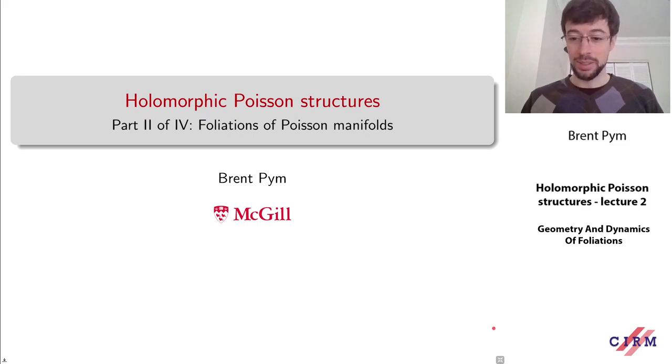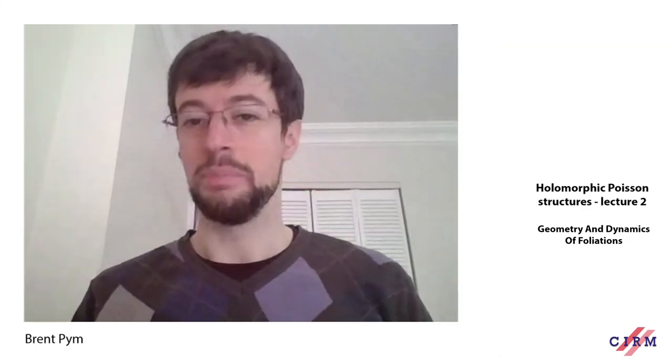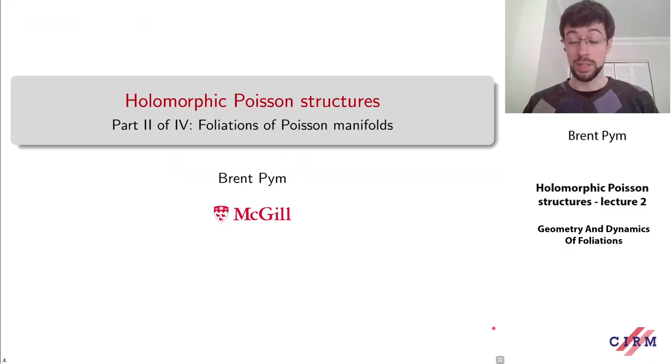Welcome to the second lecture in this mini-course on holomorphic Poisson structures. In the previous lecture we were talking about some basic aspects of Poisson geometry, particularly the local structure of Poisson manifolds, and today I want to talk about a little bit more global piece of the story, which is the structure of a foliation present on any Poisson manifold.